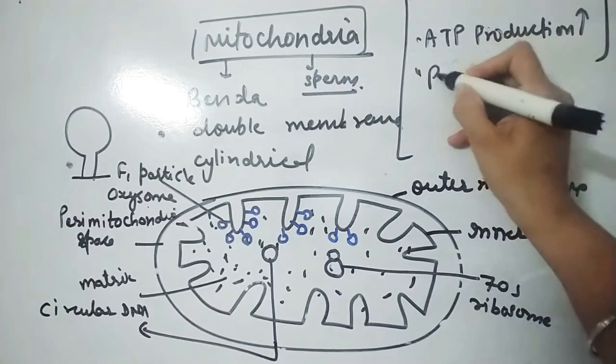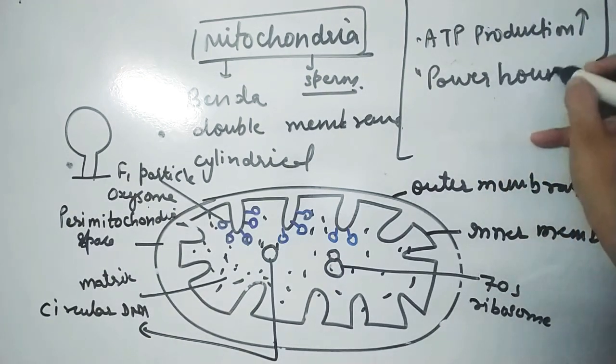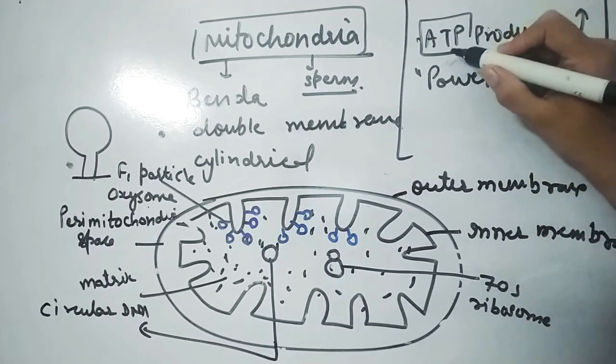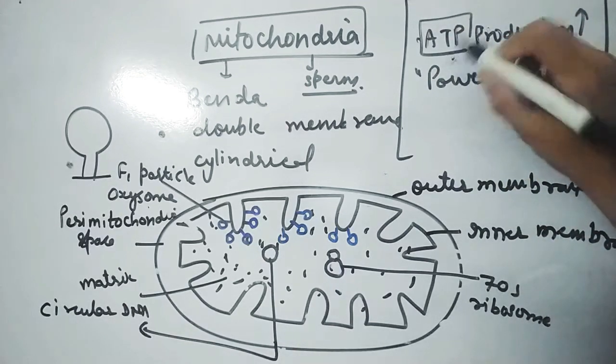Mitochondria are called the powerhouse of the cell because ATP is adenosine triphosphate. It is the form of energy.